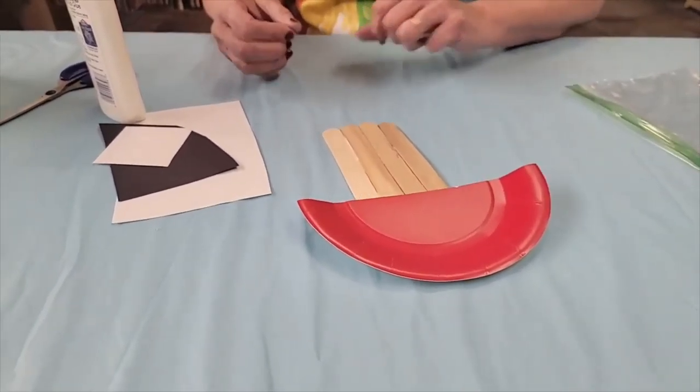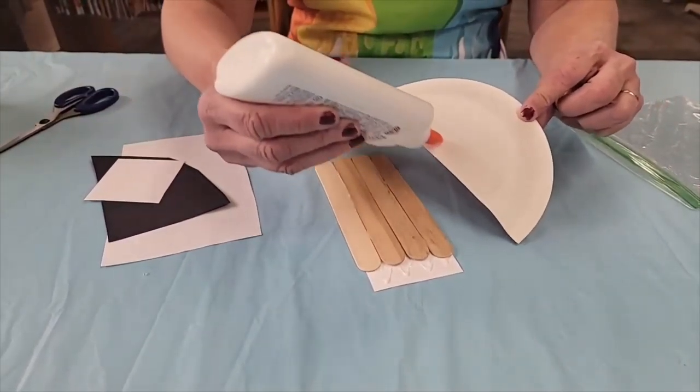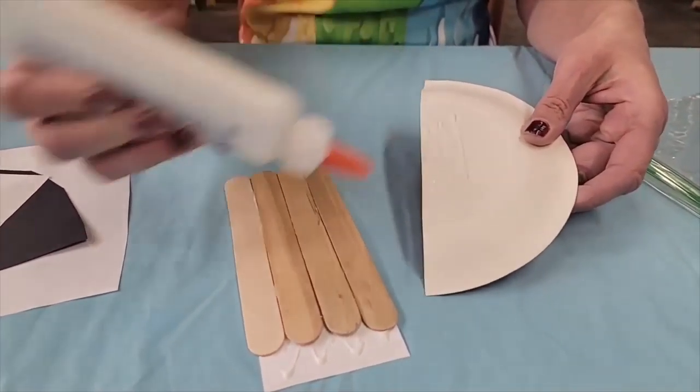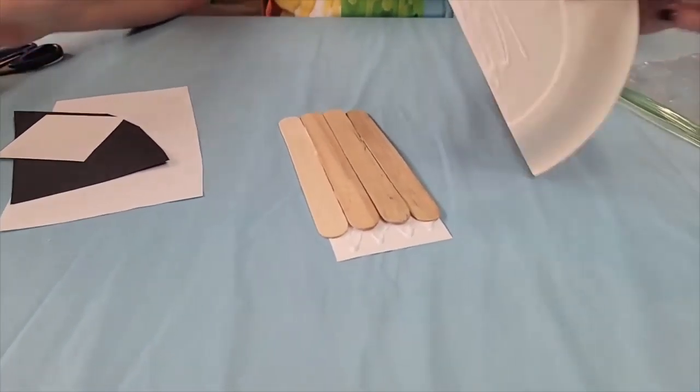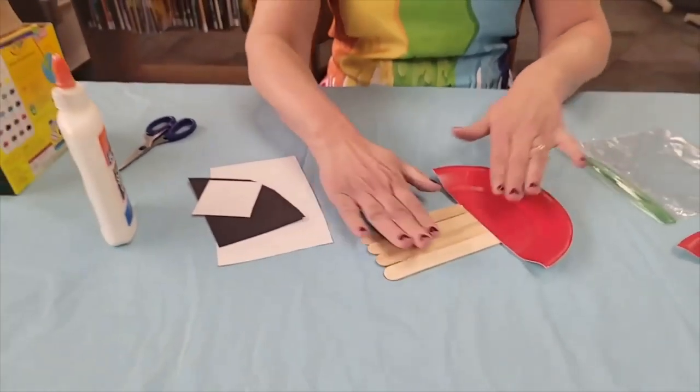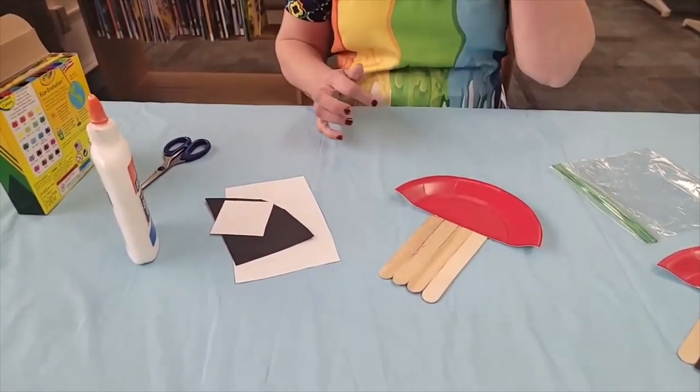Then you're just going to want to glue the top of your mushroom house. Now don't put glue across the whole bottom, boys and girls, you only need a little bit of glue here, just enough to stick on top of your craft sticks. So I'll just turn that over and we'll press that down, and so then we have the mushroom house without all of its decoration. It's very plain.